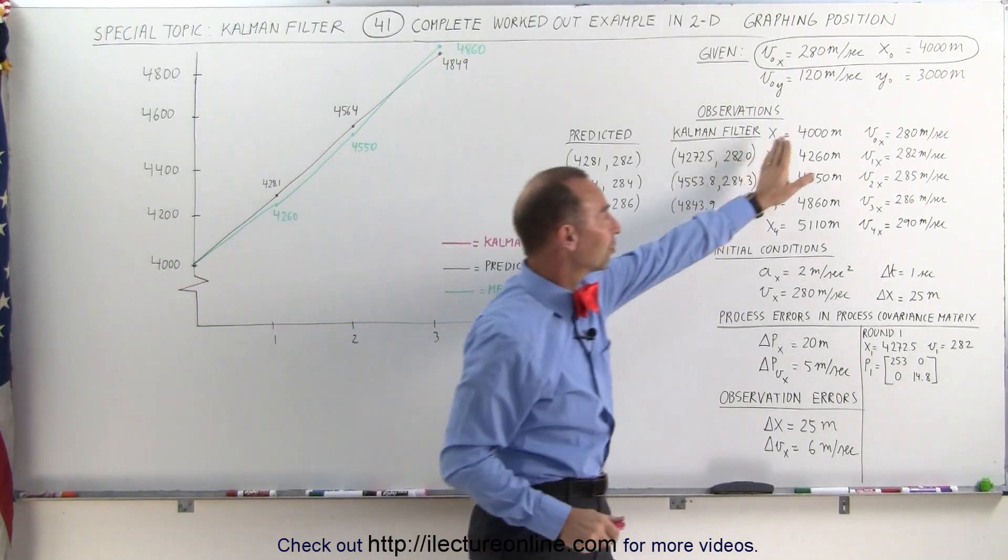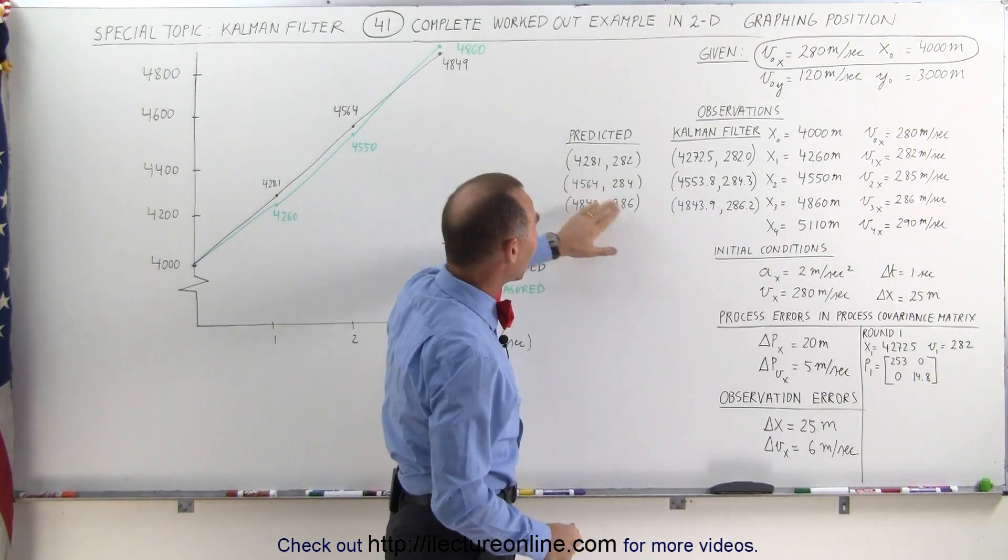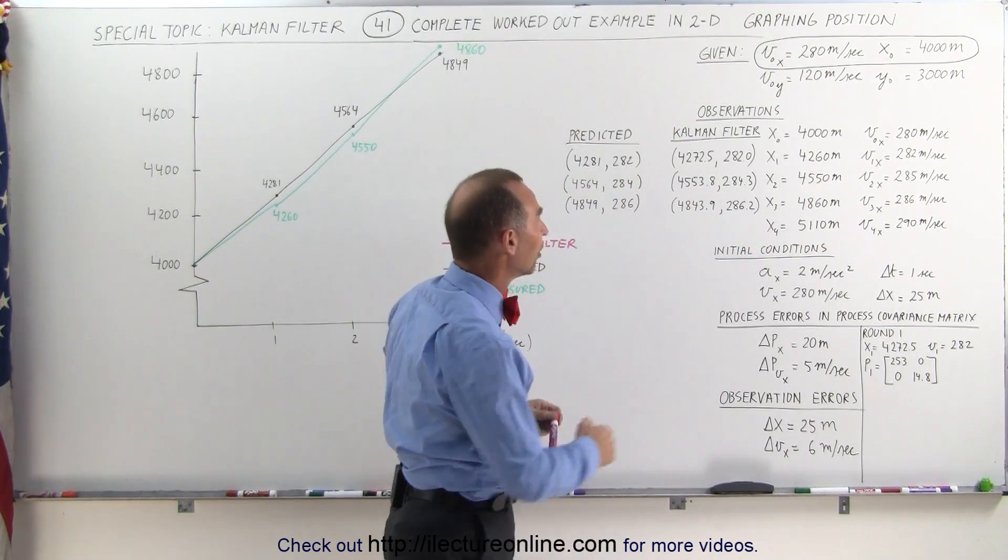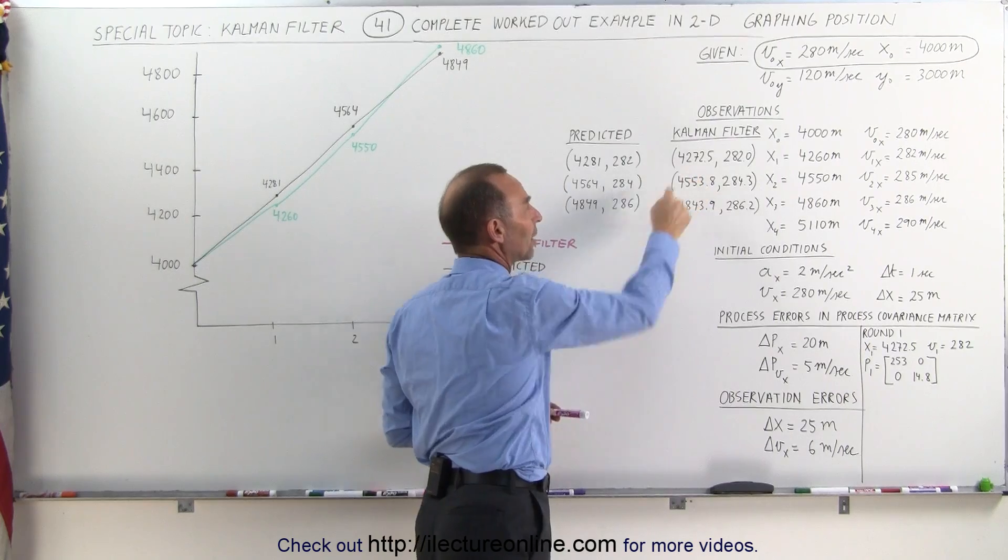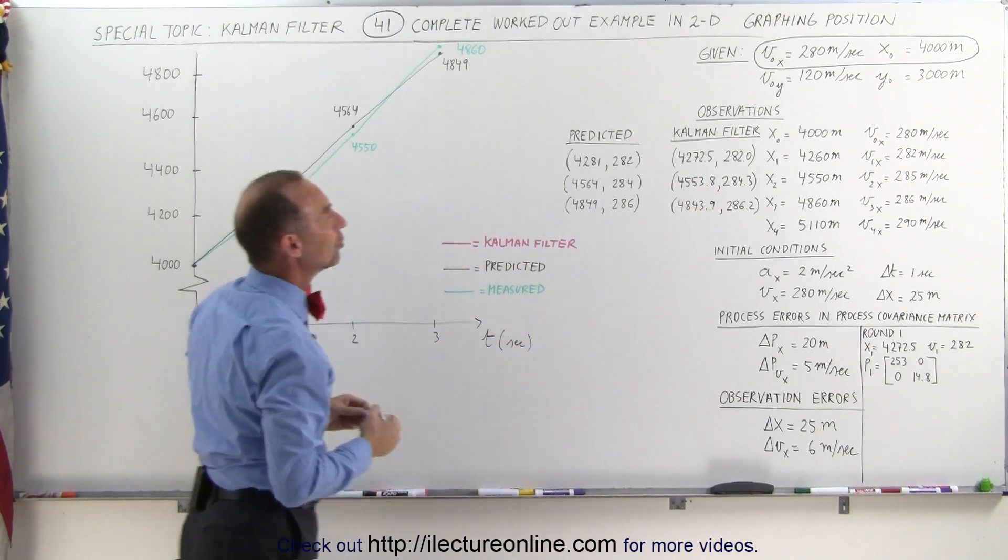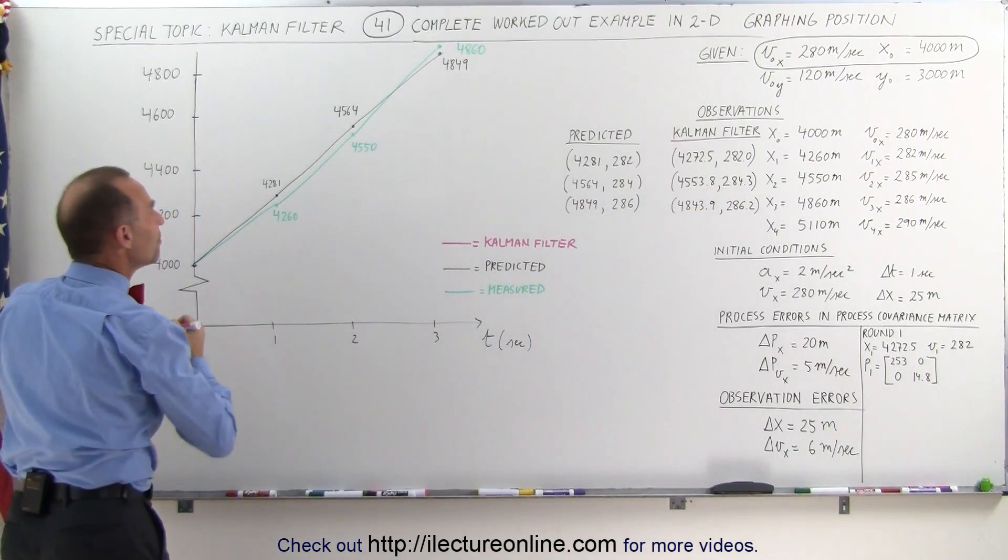Here we have the list. Here were the measured values, here the predicted values, and here the Kalman filter values. For the position after the first round, it was assumed to be at 4272 meters,